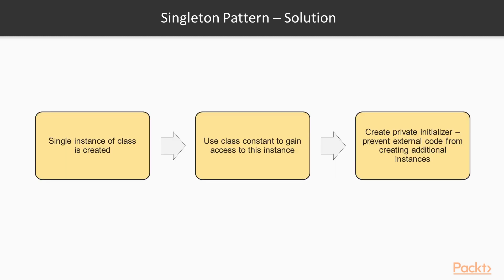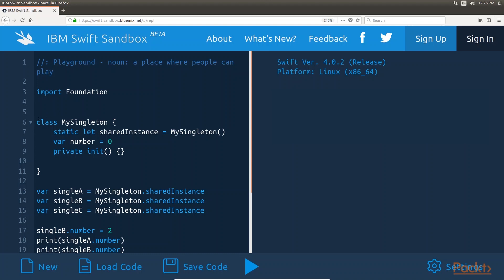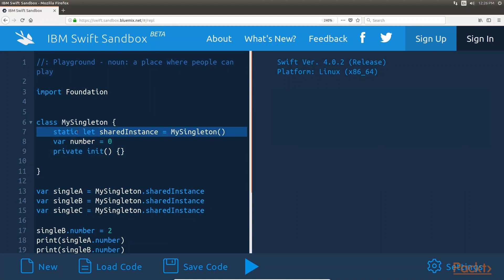There are several ways to implement the singleton pattern in Swift. With the singleton method, a single instance of the class is created the first time we access the class constant. We will then use the class constant to gain access to this instance throughout the lifetime of our application. We will also create a private initialiser that will prevent external code from creating additional instances of the class. The code snippet shows how to create a singleton class. Within the MySingleton class, we create a static constant named sharedInstance that contains an instance of the MySingleton class. A static constant like this can be called without having to instantiate the class. Since we declared the sharedInstance constant static, only one instance will exist throughout the lifecycle of the application, thereby creating the singleton pattern.